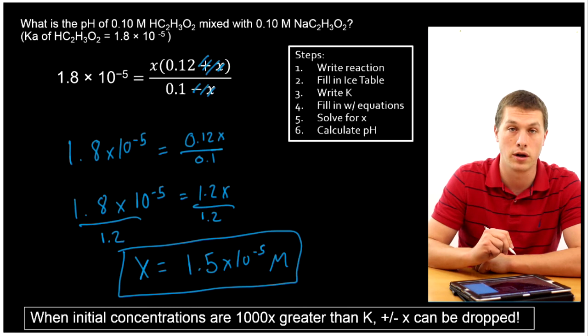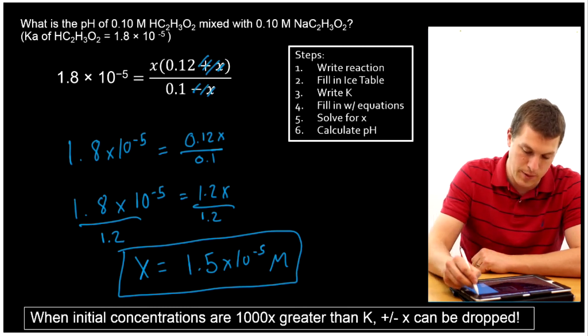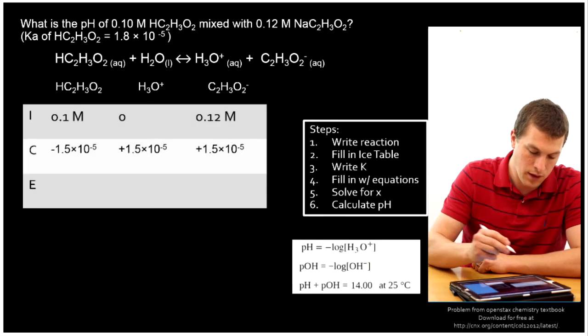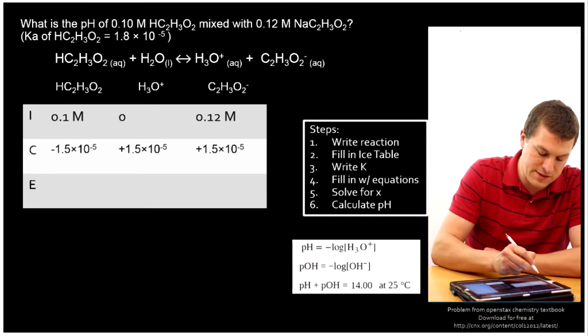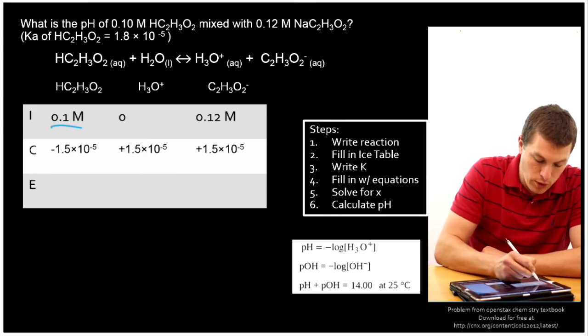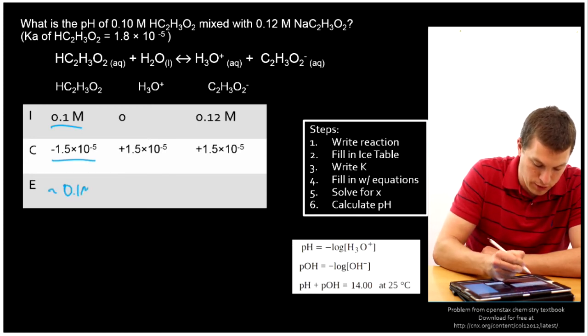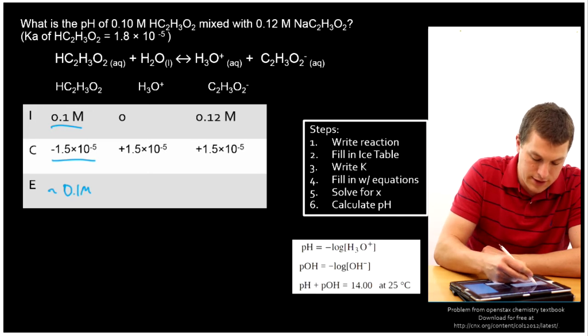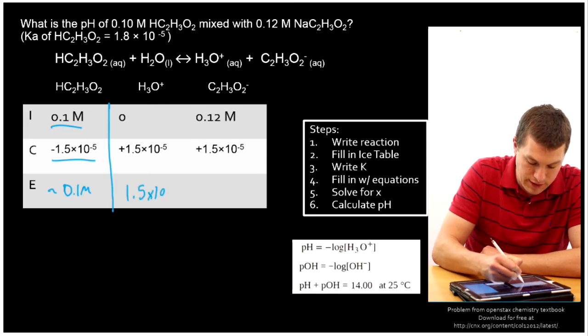So the dropping X there you can do whenever your K is really small. Particularly it has to be a thousand times smaller than your concentrations. Let's go back to our ICE table to think about what this means. Well, just like we talked about with our dropping the X thing, if I have 0.1 molar and I subtract 1.5 times 10 to the minus 5, I get basically exactly 0.1 molar, which is why I could drop the X.